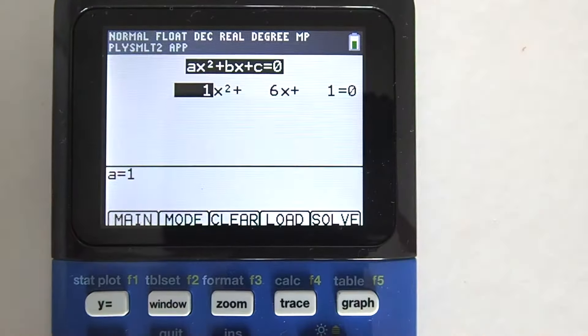Going to the store tab here will give you different options of saving the information of this equation. Go to the store tab by pressing this trace key here. You can save the coefficients of this equation to a list. You can save the equation to the y equals screen so that you can see the graph of the equation later. Or you can save the roots of the equation.